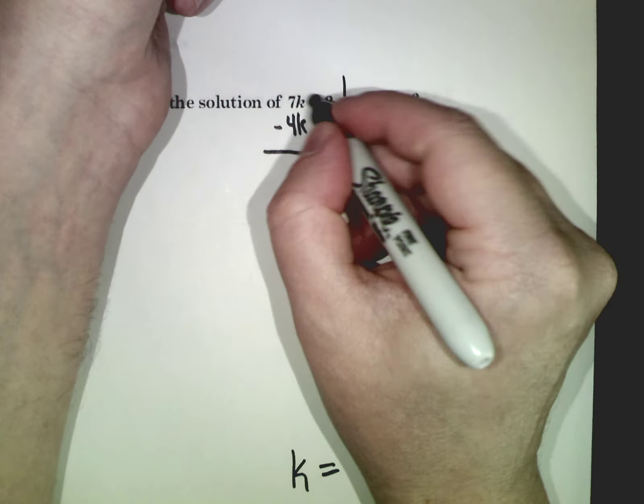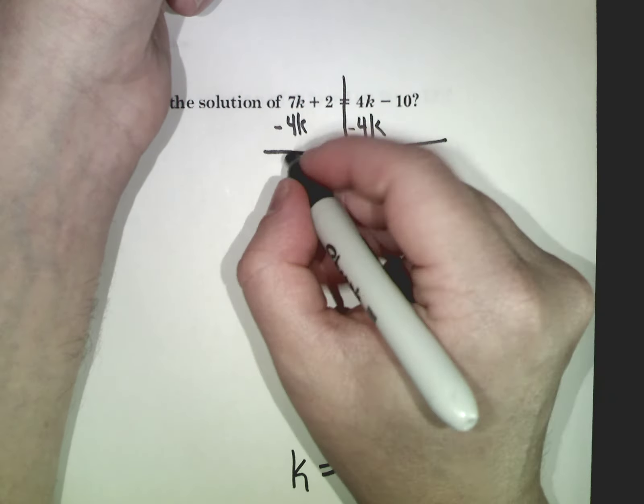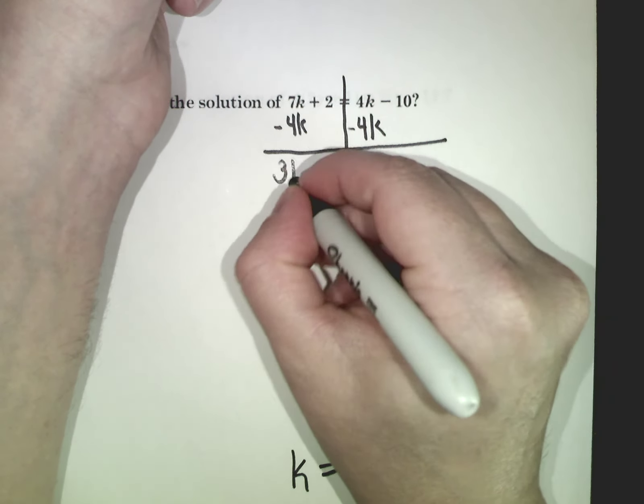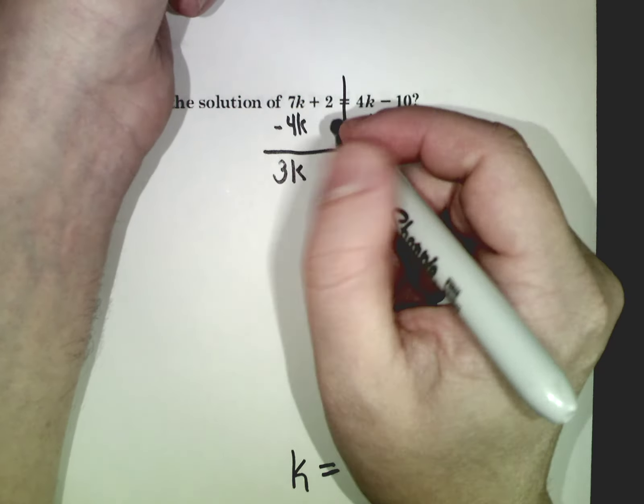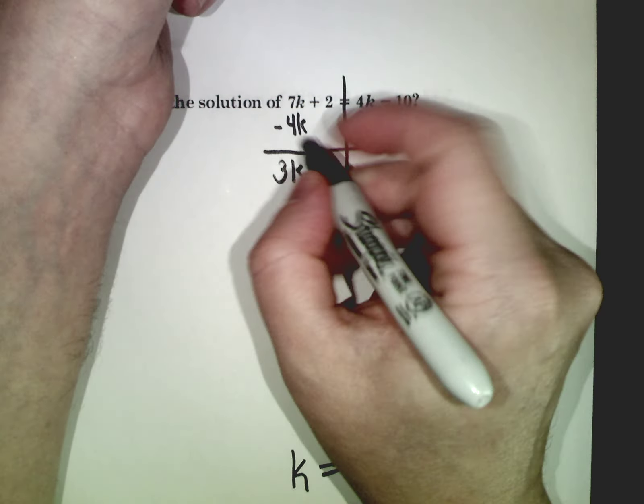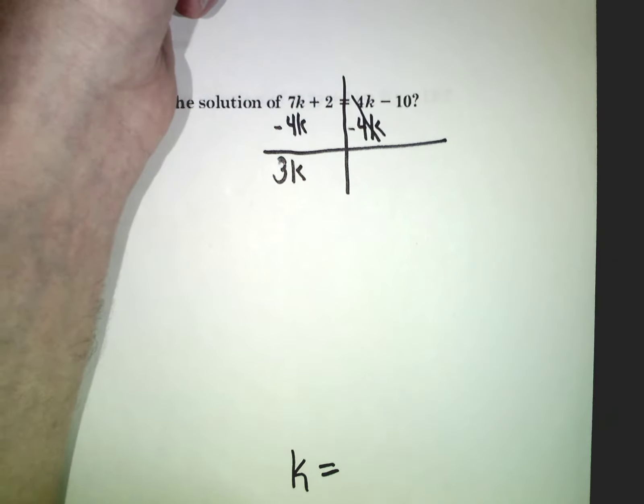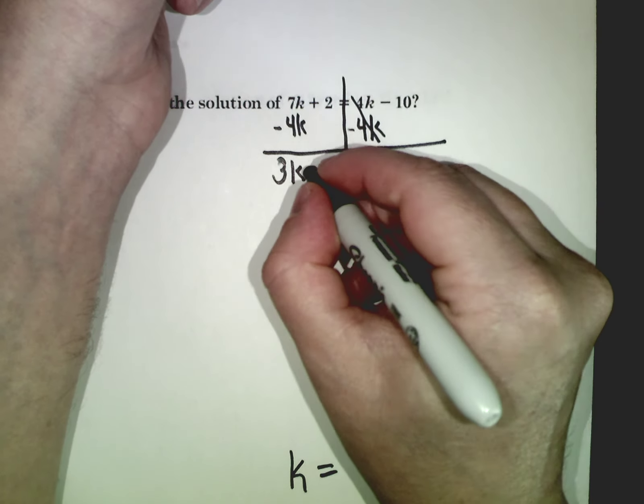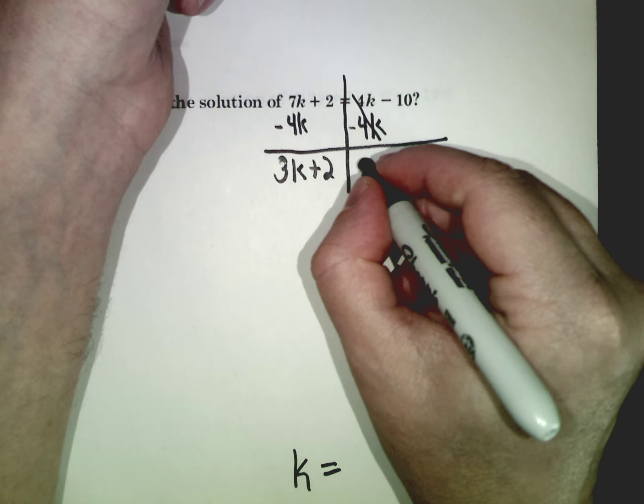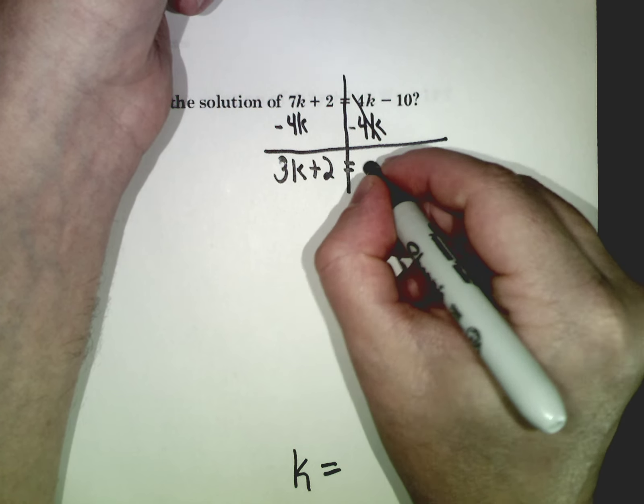So what I get now: 7 minus 4k is just 3k. 7 minus 4 is really what you're concerned about. You keep the k. So you do 7 minus 4 in your calculator. And this goes to 0. So I just bring down what I've got left. Plus 2 equals negative 10.